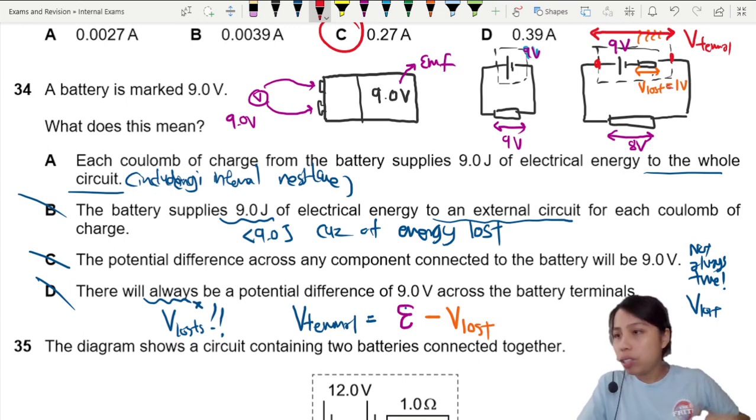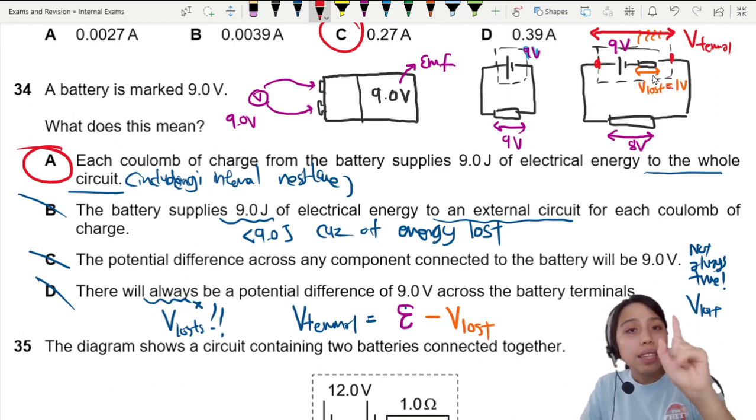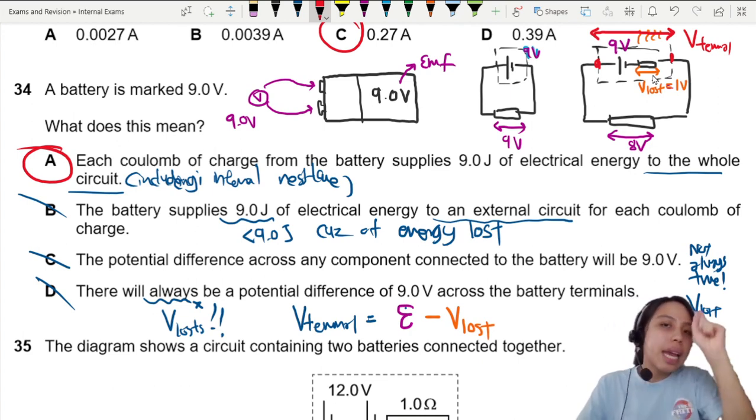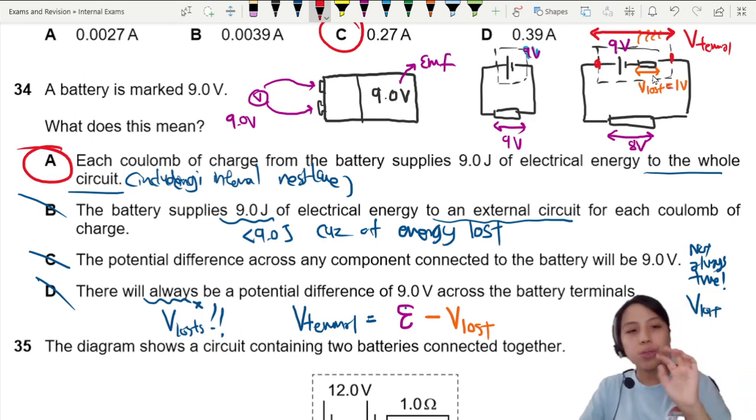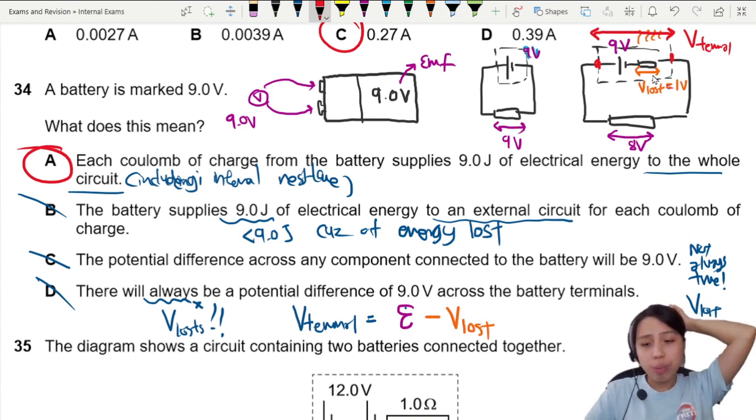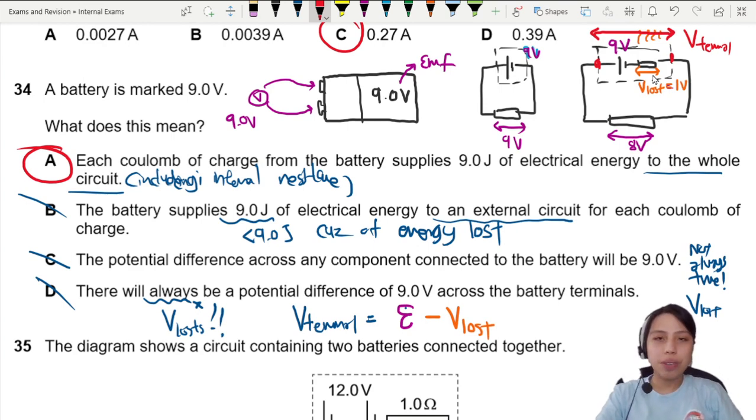So, the best statement that can apply to all situations is going to be A. Each coulomb battery, coulomb will charge 9 joules to the whole circuit, including internal resistance. So, that is from energy, chemical energy, convert to electrical energy. This is a pretty tricky question. Make sure you know the definition of EMF and potential difference, and you'll be okay. That's all for this question.